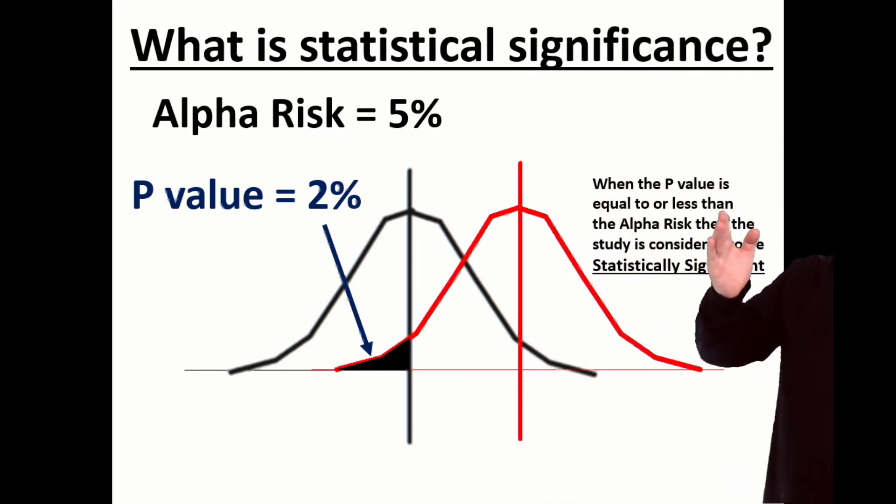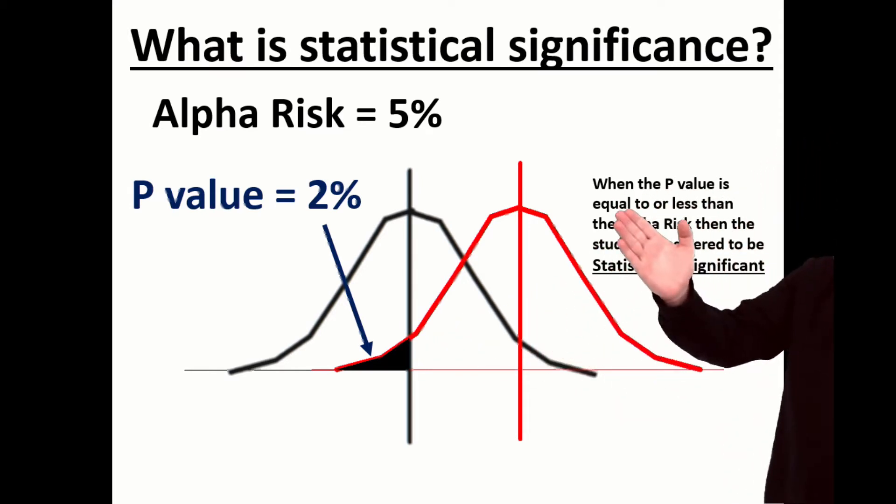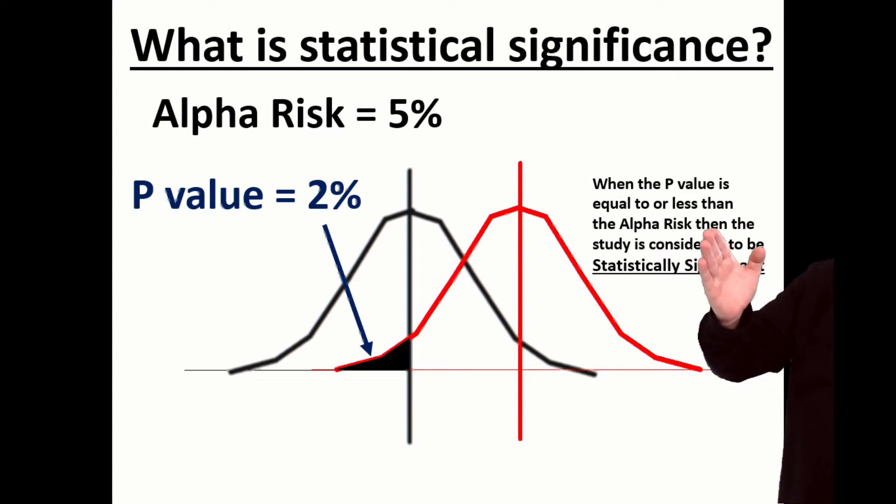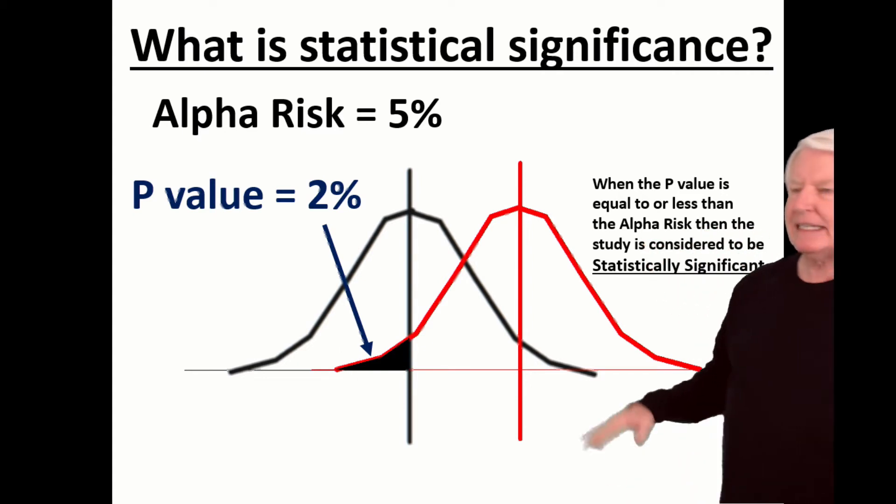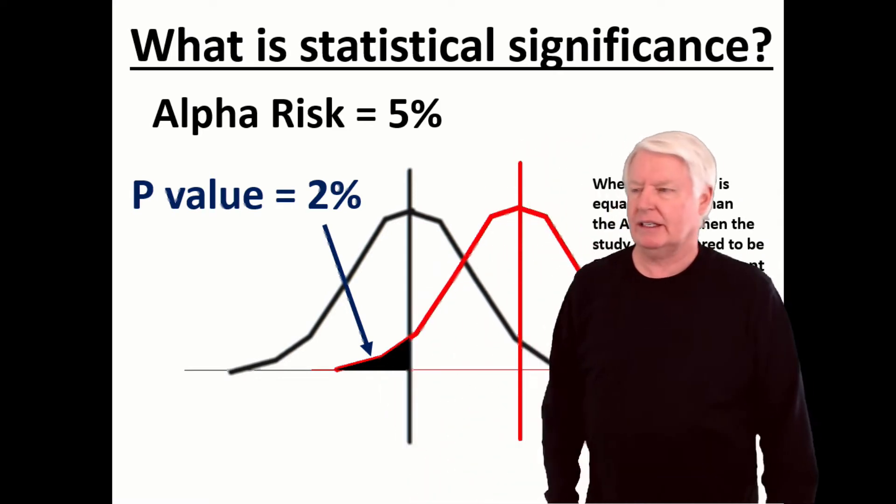When the P-value is equal to or less than the alpha risk, then the study is considered to be statistically significant. But it doesn't mean it's practically significant.